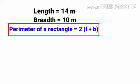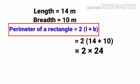Perimeter of a rectangle equals 2 into l plus b, equals 2 into 14 plus 10. 14 plus 10 is 24, 2 into 24 equals 48 m. So perimeter of the rectangle is equal to 48 m.